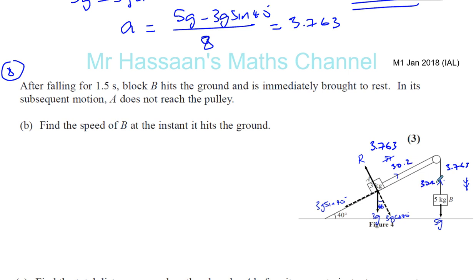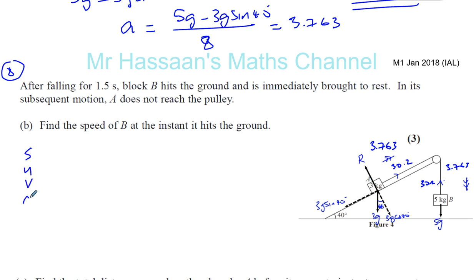Just in case we need that, I'll write that down. Now, after falling for 1.5 seconds, block B hits the ground and is immediately brought to rest. In its subsequent motion, A does not reach the pulley. We need to find the speed of B at the instant that it hits the ground. We know that in the beginning it was at rest, so let's use our SUVAT equations. This has a constant acceleration during the time it's falling of 3.763.